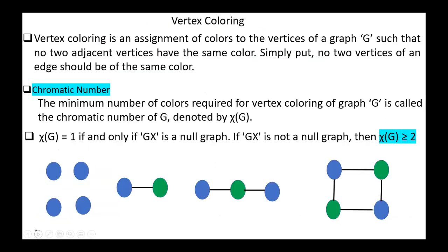Vertex coloring is an assignment of colors to the vertices of a graph G such that no two adjacent vertices have the same color. Simply put, no two vertices of an edge should be of the same color. The minimum number of colors required for vertex coloring of graph G is called the chromatic number of G, denoted by Chi of G.